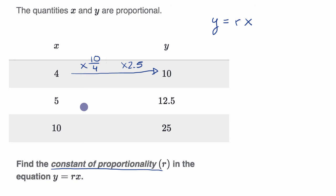So let's see, does that hold? In every case, if I multiply x by two and a half, do I get y? So five times two and a half, five times two is 10, and then another half is 2.5. It indeed does equal 12.5.